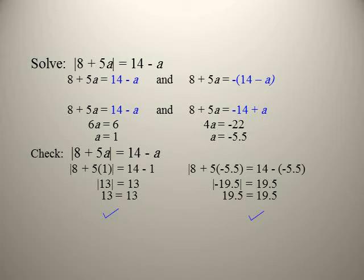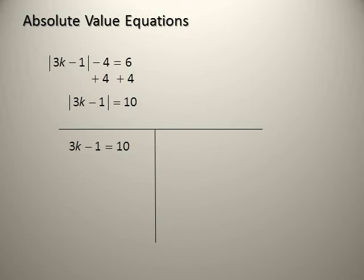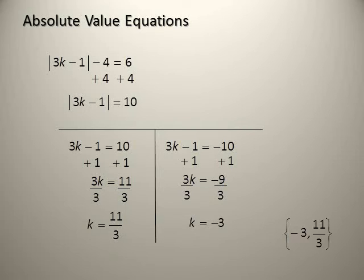Solve |3k − 1| − 4 = 6. First isolate the absolute: |3k − 1| = 10. Then 3k − 1 = 10 or 3k − 1 = −10. First equation: 3k = 11, so k = 11/3. Second: 3k = −9, so k = −3. The solution set is {−3, 11/3}.